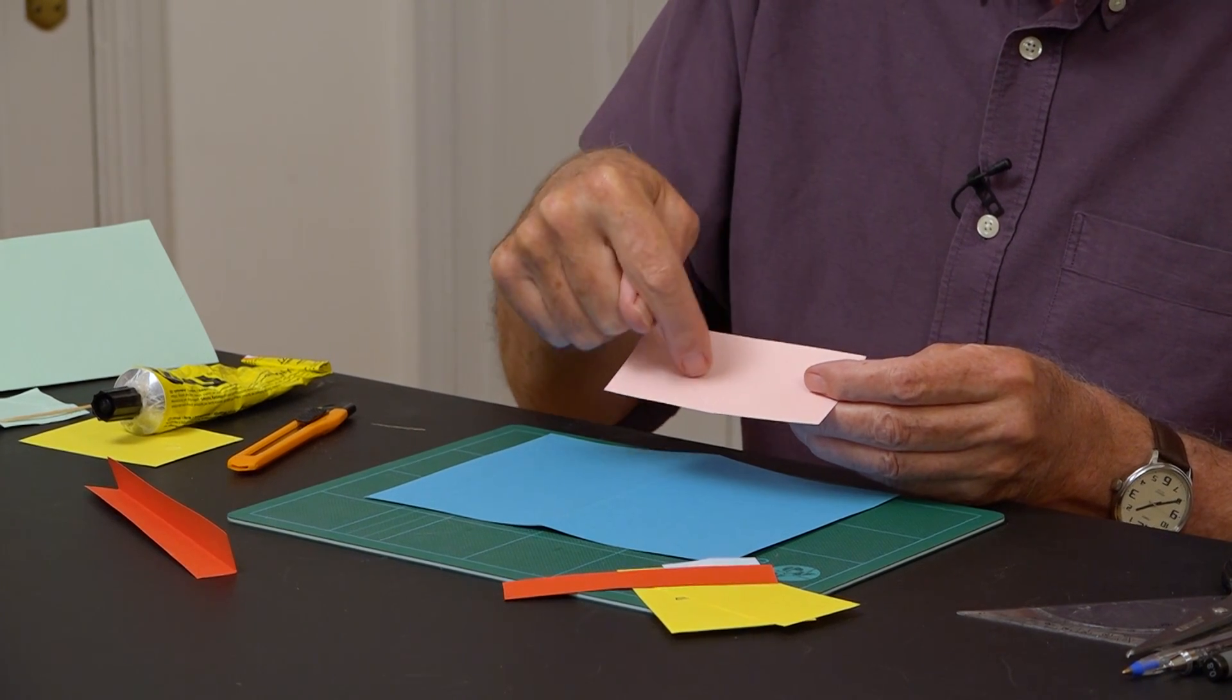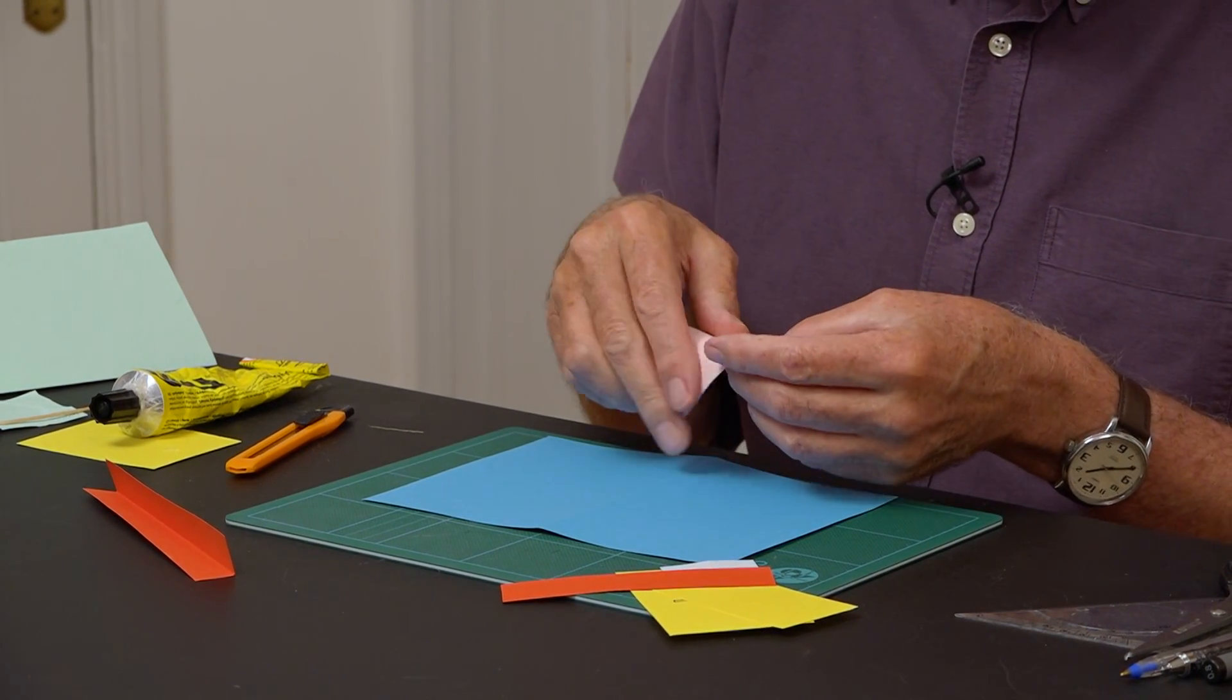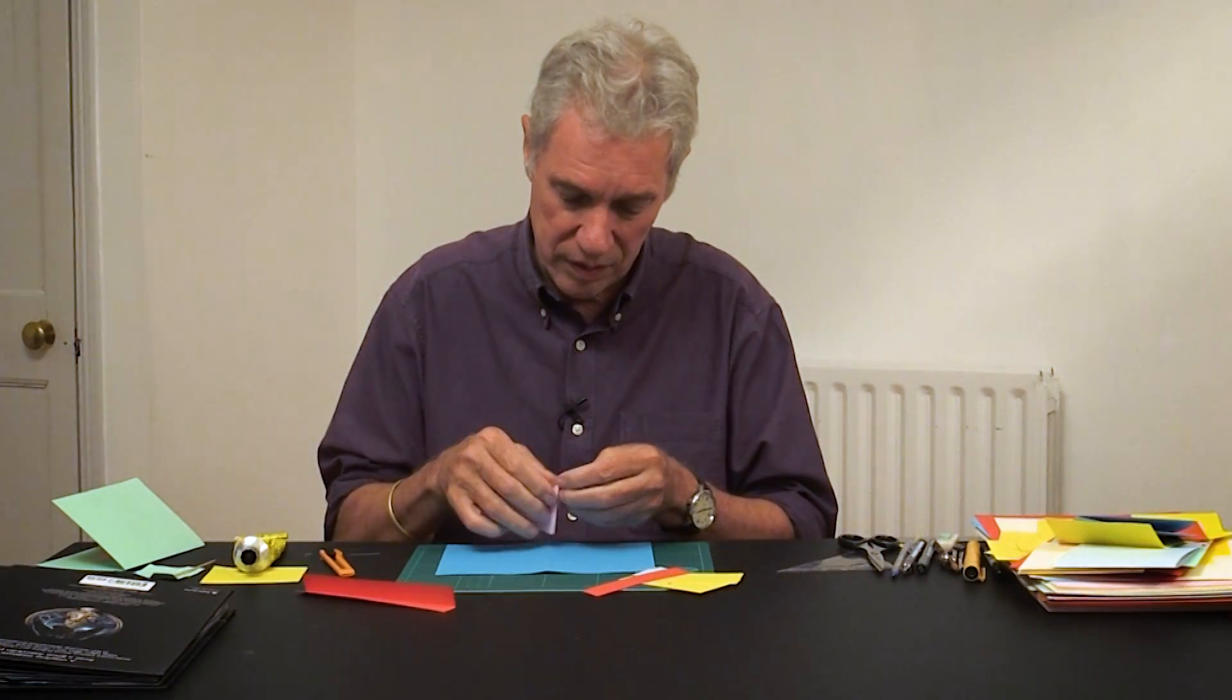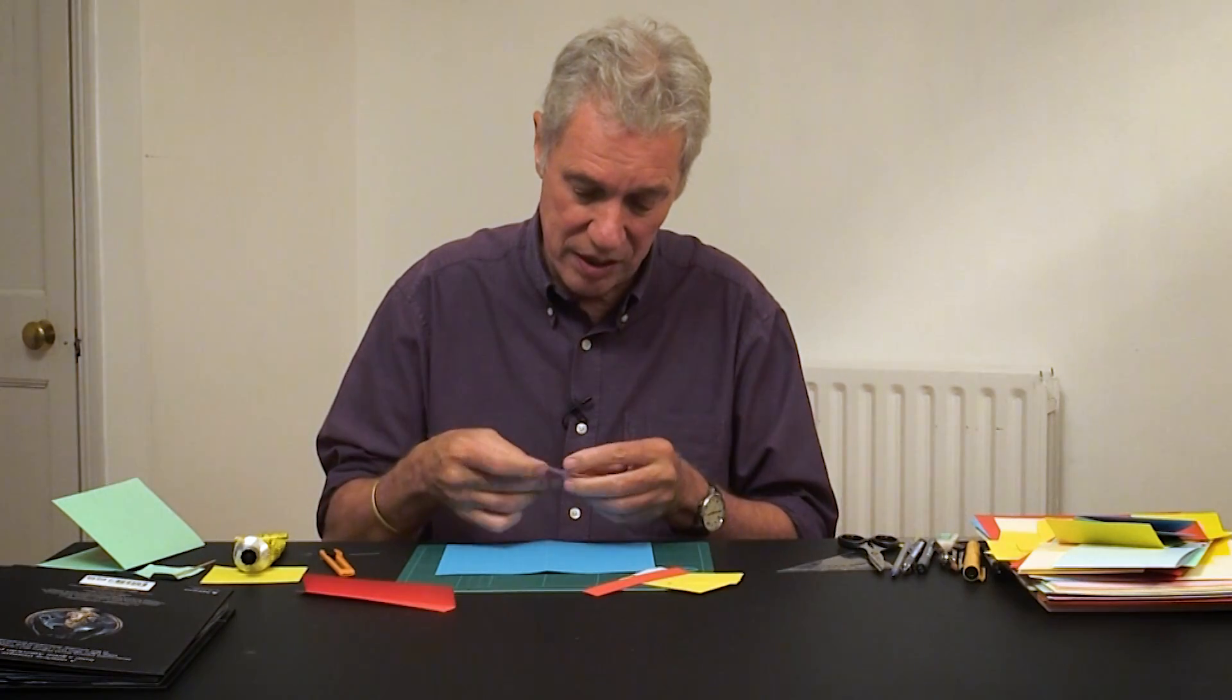This is the V-fold. Both these angles are 45 degrees. I haven't creased it yet. I'll just crease that now. So that's creased really thoroughly.